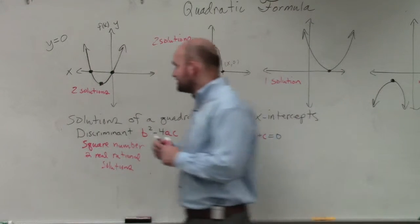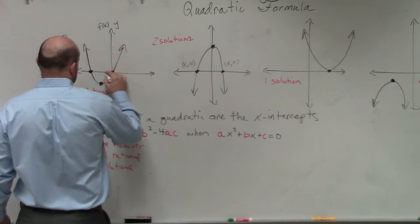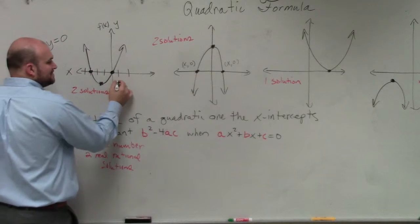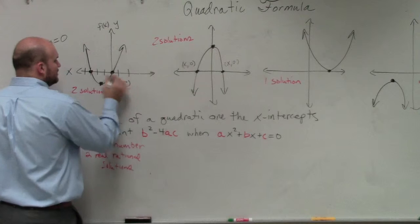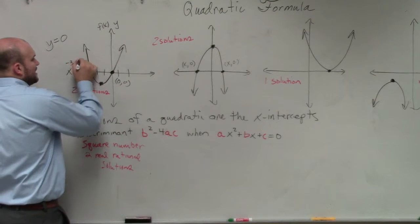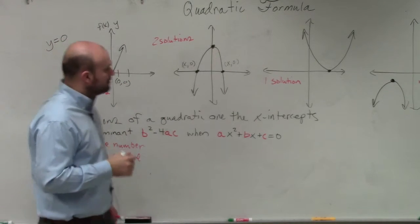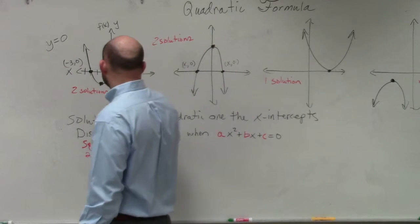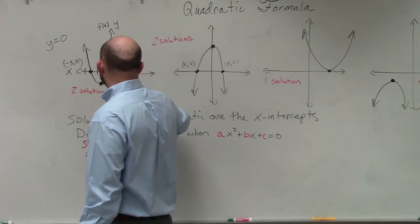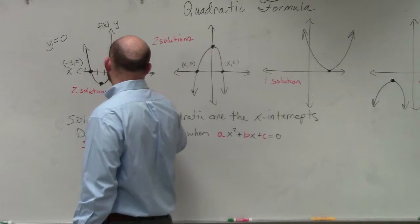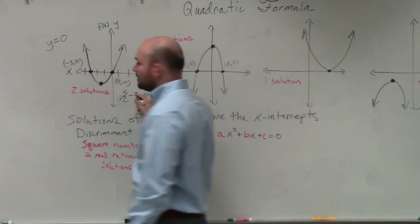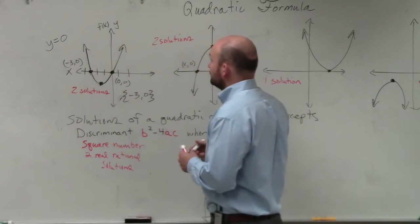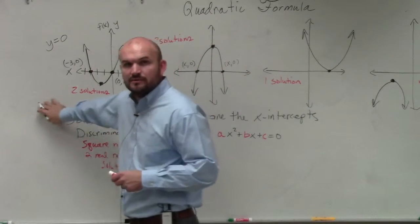For instance, for example, my two x-intercepts here is 0 comma 0 and negative 3 comma 0. My two solutions is x equals, my two solutions here is negative 3 and 0. So are those rational numbers? Yes. Rational numbers, I didn't write this in here. Do I have more room?